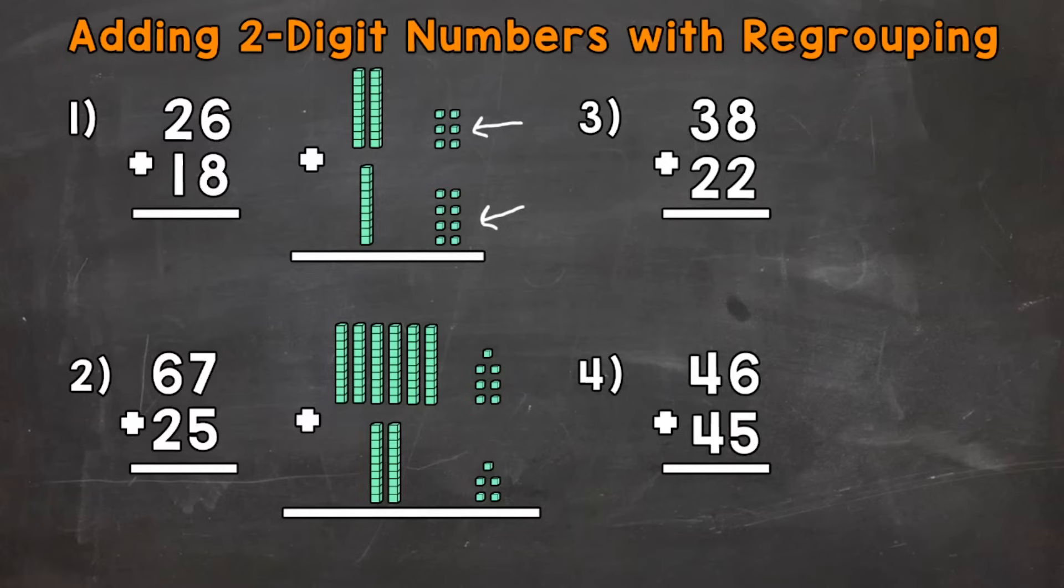So what we're going to do is make a group of 10 out of the ones and regroup or carry it over to the tens place. So we have 6 ones plus another 4 ones would give us a group of 10. So we're going to regroup that group of 10 over to the tens place. And I'll put a stack there representing a group of 10. So we have 4 ones left in the ones place. So we'll put that 4 in the ones.